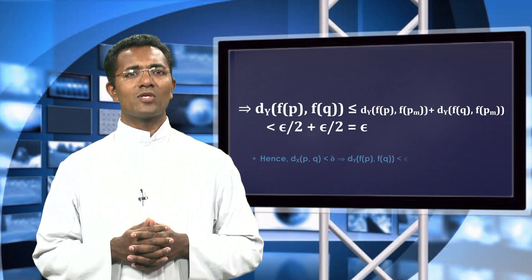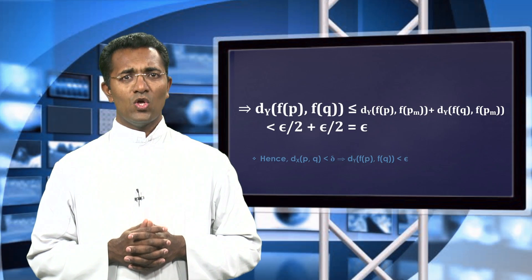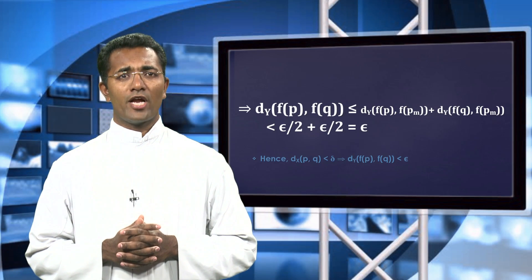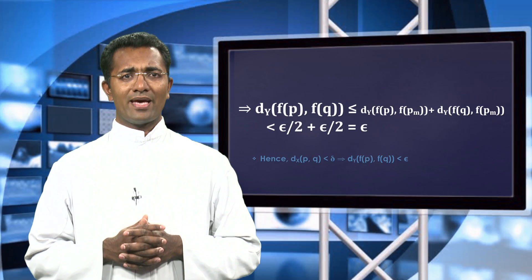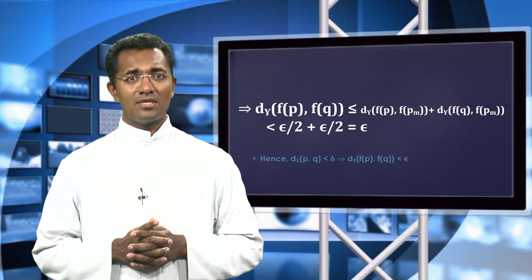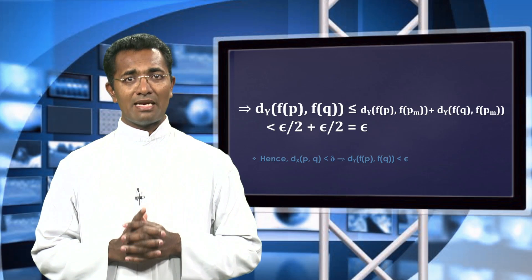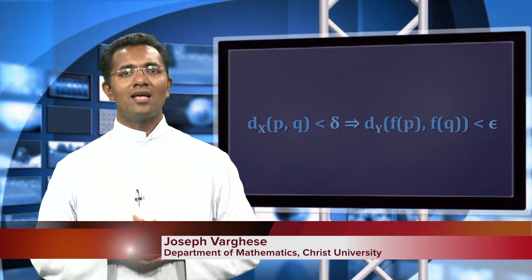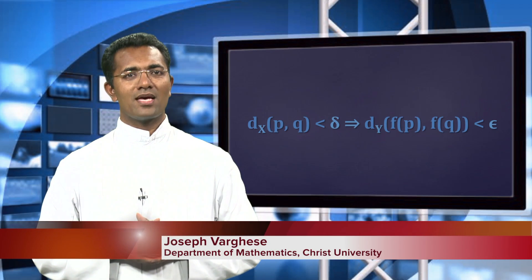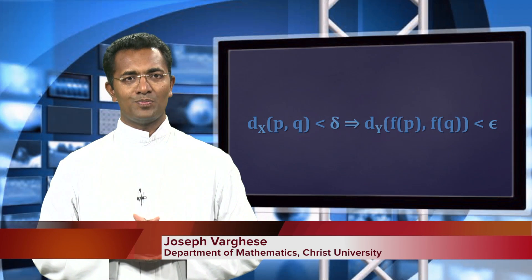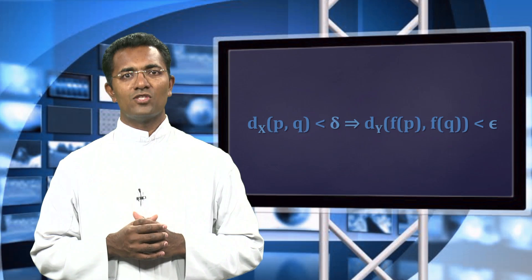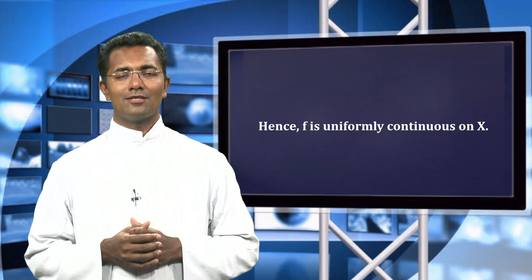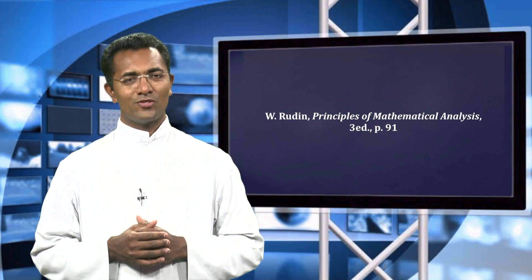Hence, for the choice of epsilon greater than 0, we found a delta such that for any two points p and q in X, the distance between them being less than delta immediately implies that the distance between f(p) and f(q) is less than epsilon. This shows that f is uniformly continuous on X. Thank you very much.